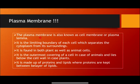Plasma membrane is also known as cell membrane or plasma lemma. It is the limiting boundary of the cell which separates the cytoplasm from its surroundings. From inside it separates from the cytoplasm, and from outside it separates from other cells in our body. It is found in both plant cells and animal cells. It is the outermost covering in the case of animal cells, and in the case of plant cells, it is below the cell wall.